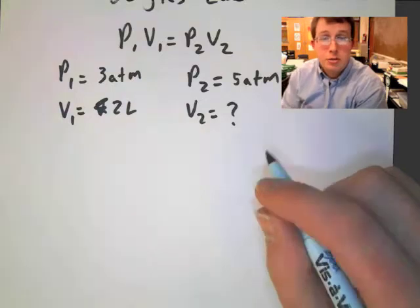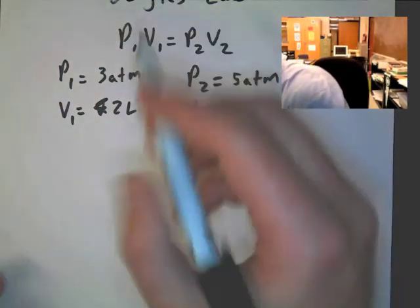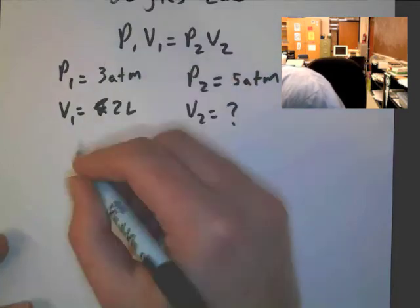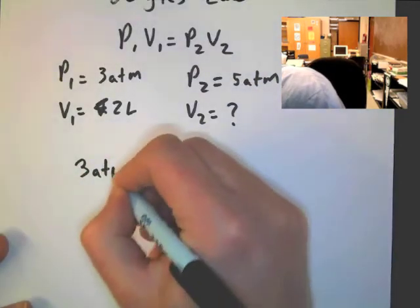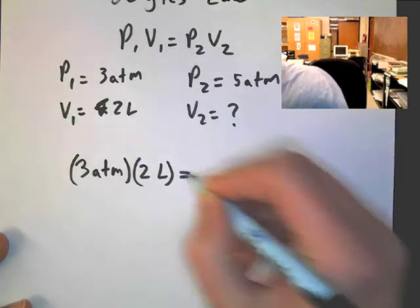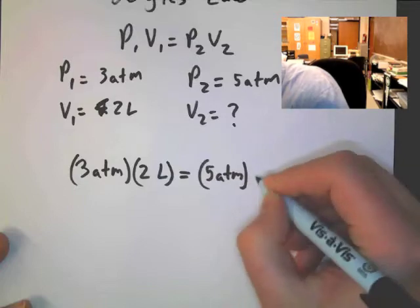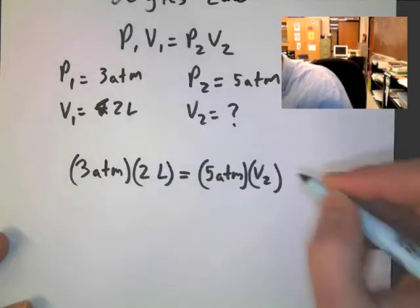What we need to do once we have this is actually plug them back into the original equation. Let's take a look here at our equation. We're going to plug in 3 atmospheres, 2 liters. And that's equal to 5 atmospheres. And then we are solving for volume 2.